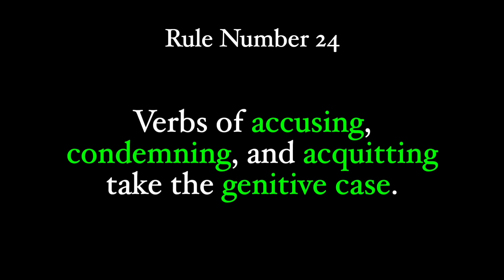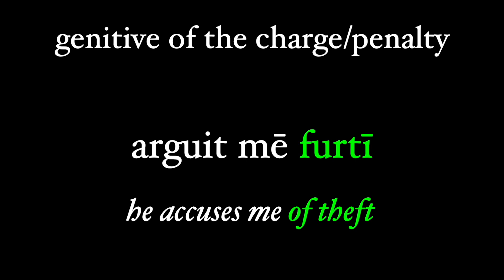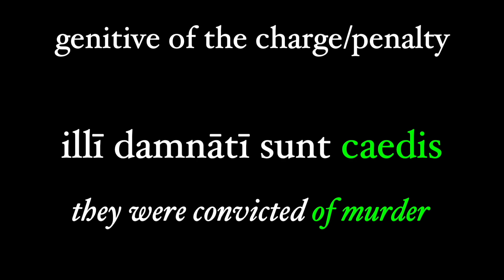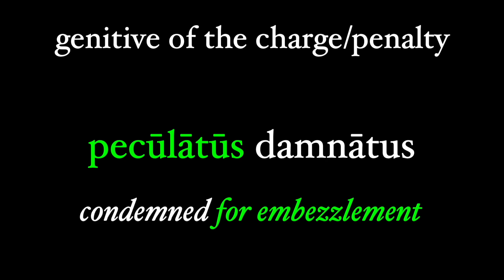Rule number 24: verbs of accusing, condemning, and acquitting take the genitive case. There's a little-known genitive called the genitive of the charge or penalty at work here. Here it is in action: 'arguit me furti' — he accuses me of theft. The word 'furti' is in the genitive case because it's the thing being accused of or charged with. 'Tu absolutus est improbitatis' — you were acquitted of outrage. 'Illi damnati sunt caedis' — they were convicted of murder. And there's the phrase 'peculatus damnatus' — condemned for embezzlement — where 'peculatus' is a fourth declension genitive reflecting the charge.